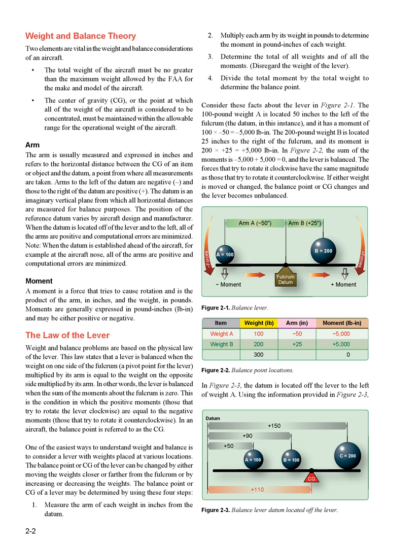Consider the lever in figure 2-1. The 100-pound weight A is located 50 inches to the left of the fulcrum — the datum in this instance — and has a moment of 100 × (−50) = −5,000 pound-inches. The 200-pound weight B is located 25 inches to the right of the fulcrum, with a moment of 200 × (+25) = +5,000 pound-inches. In figure 2-2, the sum of moments is −5,000 + 5,000 = 0, and the lever is balanced.